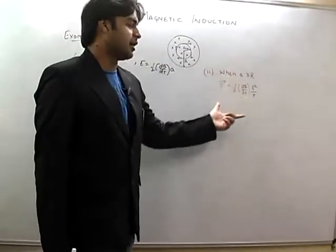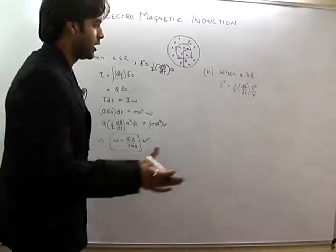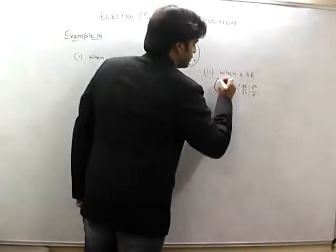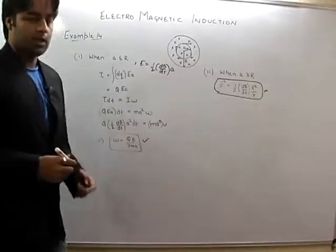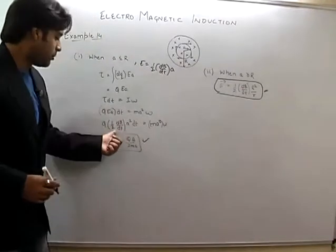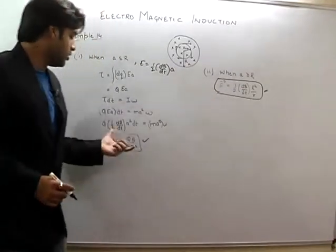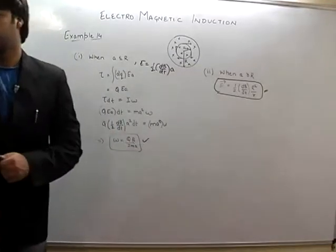Now when a is greater than R, simply what do you want to do? Not do anything. Only the formula will change. Only here, the E formula I have to change, and the omega value will change accordingly.